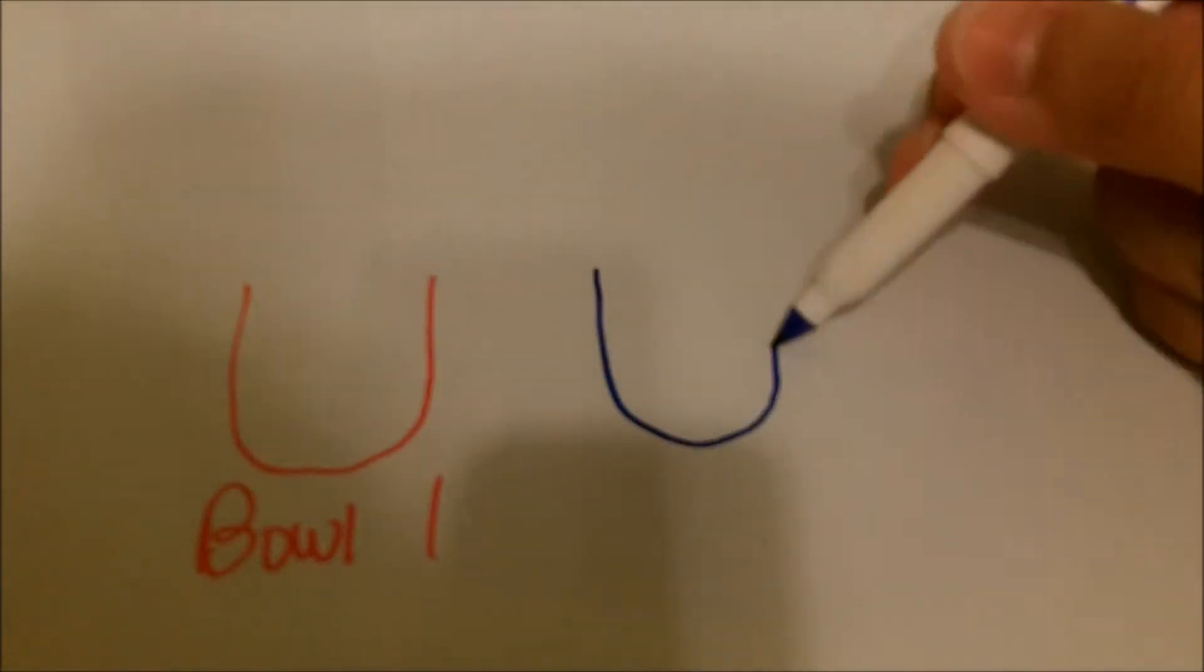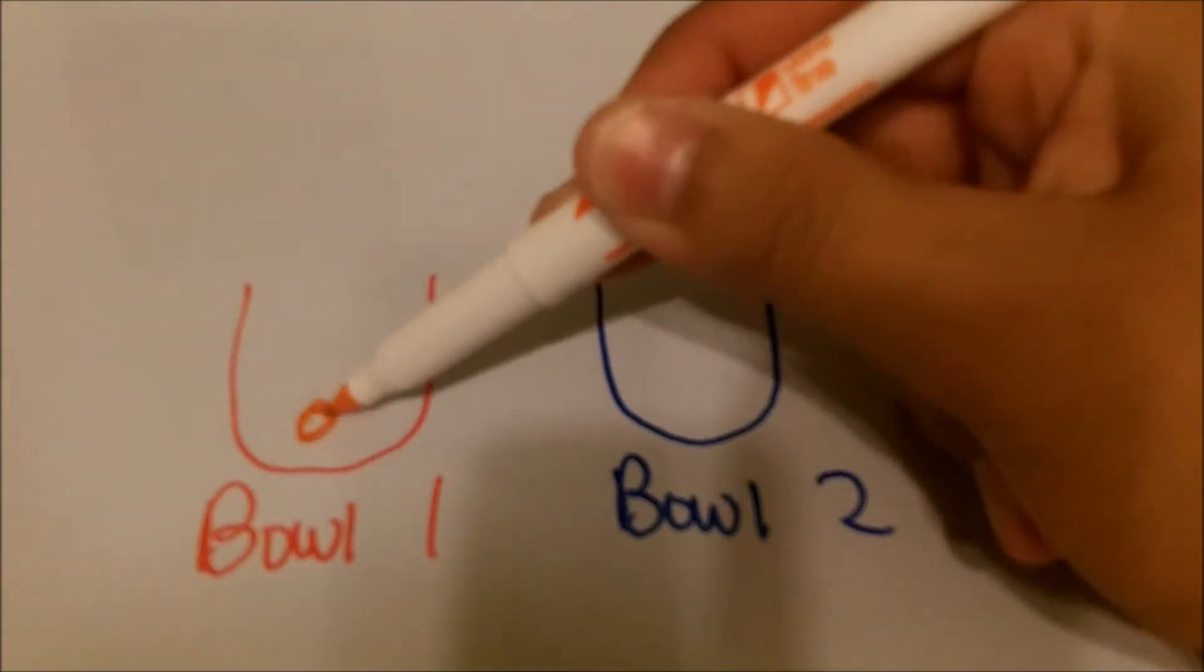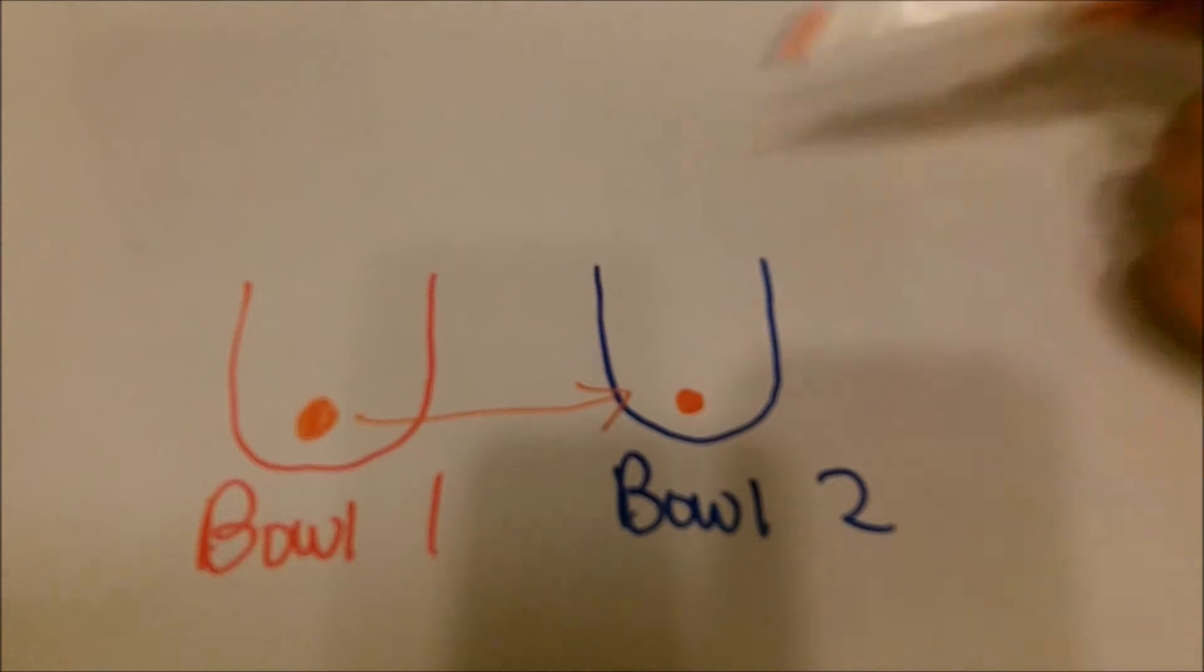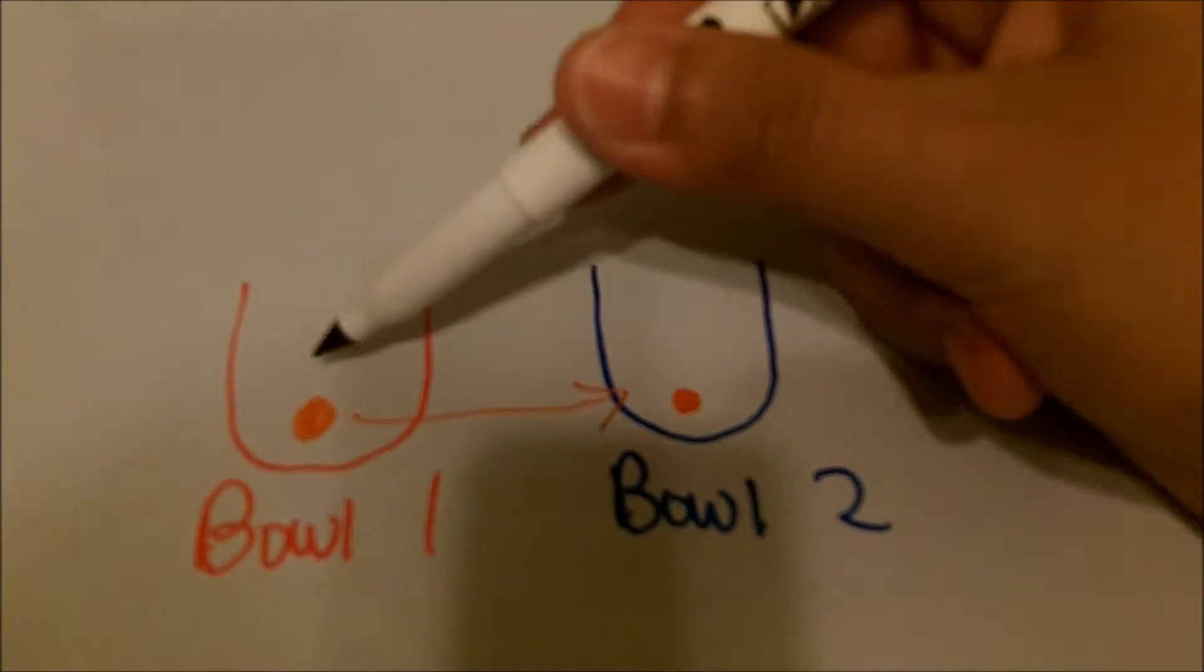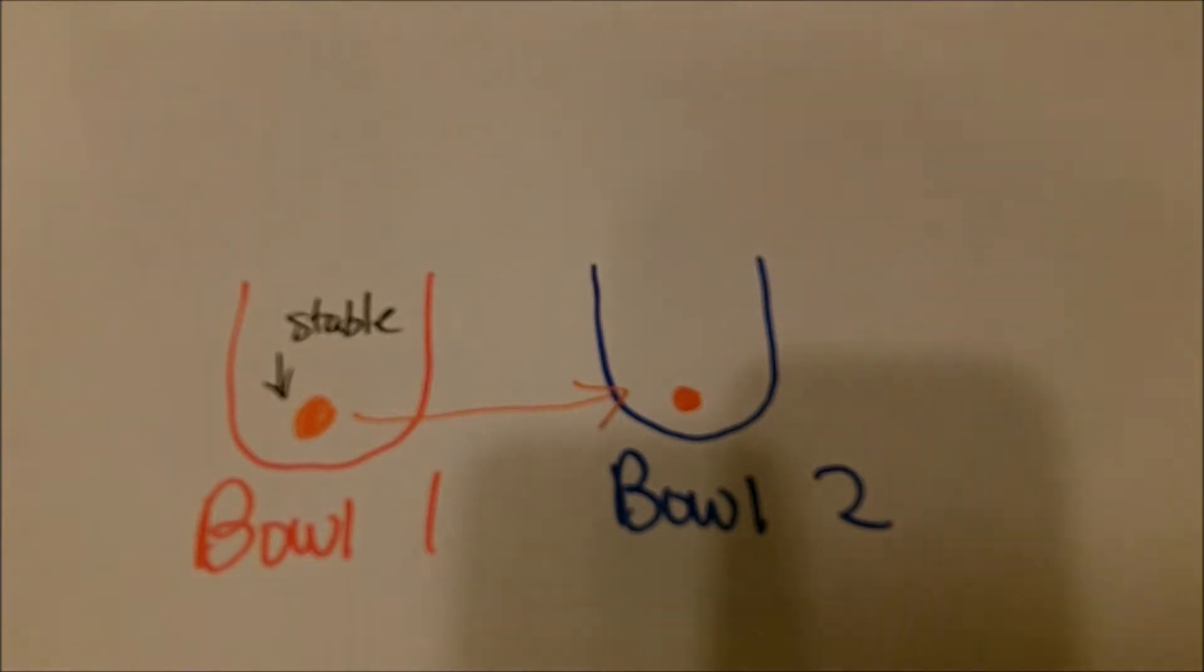So I'm going to start out by drawing two bowls, just two ordinary bowls, and we need a stable point where we can place our marble. So I'm going to place it at the bottom and classical physics tells us that by placing this at the bottom it's not going to move unless we move it ourselves. However, as you can see I've drawn it in bowl two as well. This is an example of quantum tunneling.